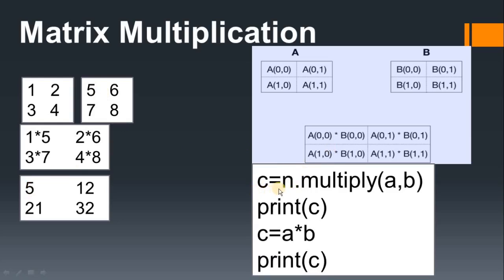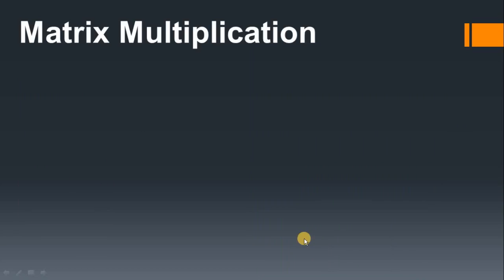From a coding perspective, you write `c = np.multiply(a, b)` — where `np` is the alias for the numpy module, and `a` and `b` are the two matrices. Then `print(c)` gives you the element-wise multiplication result. You can also write `c = a * b`, which performs the same element-wise multiplication. Both methods produce the same output.